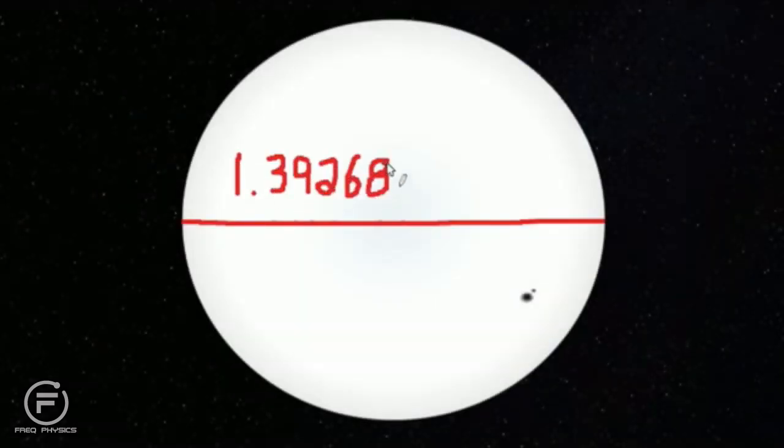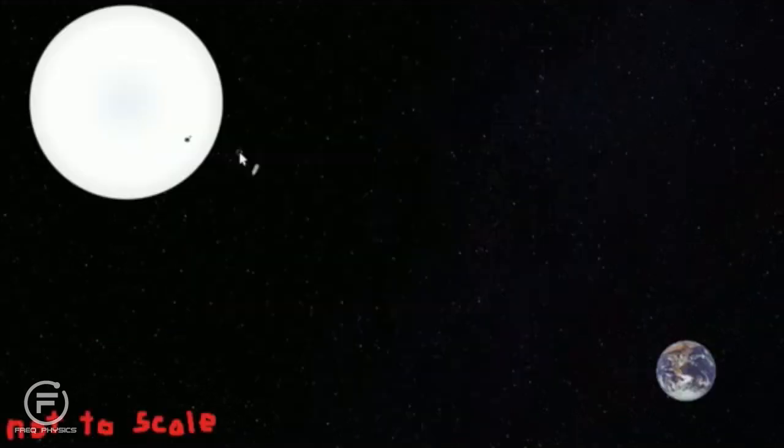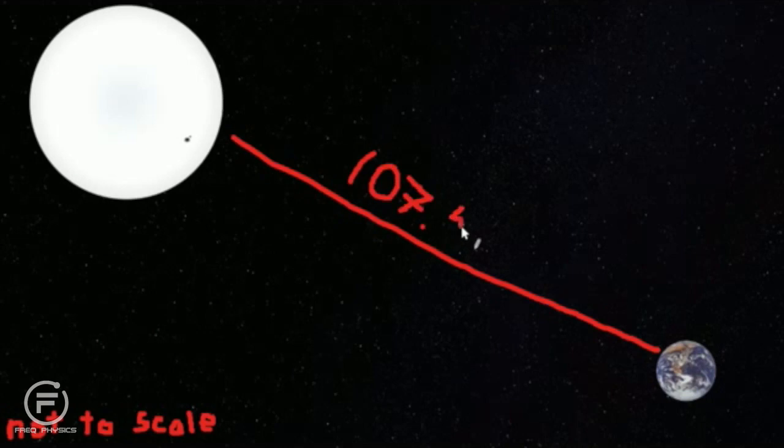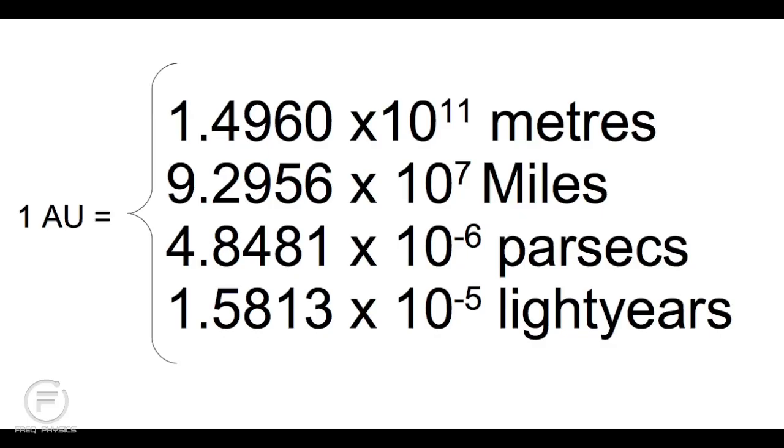If you were to measure the distance to the Sun with the diameter of the Sun itself, it would take 107.59 suns to reach the Sun from Earth. And this is what we call one astronomical unit.